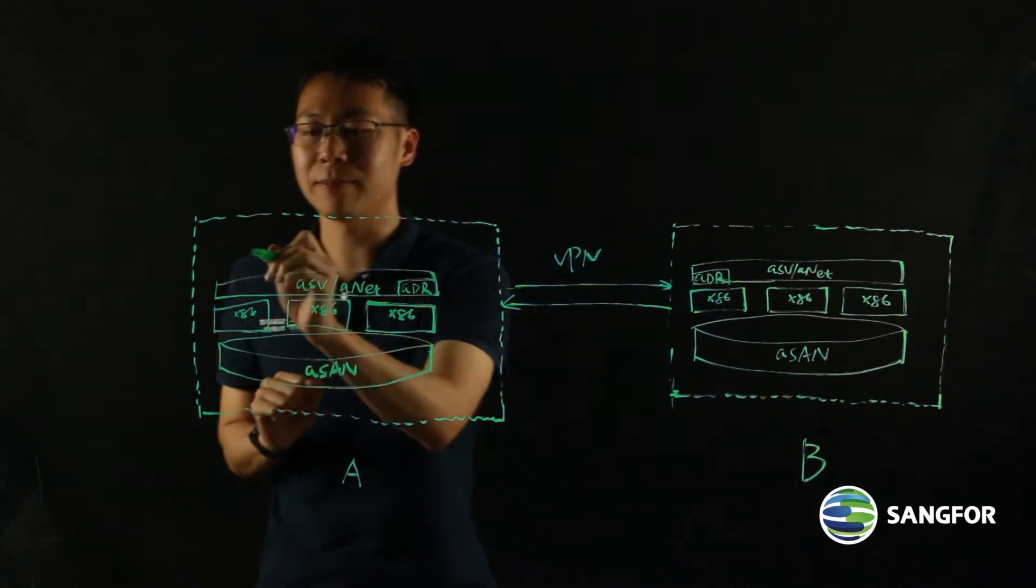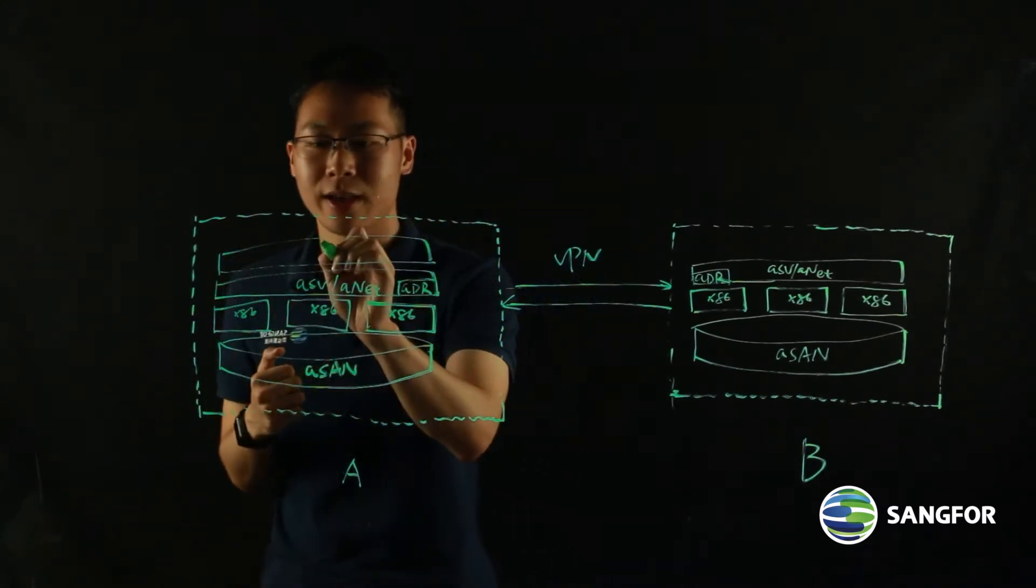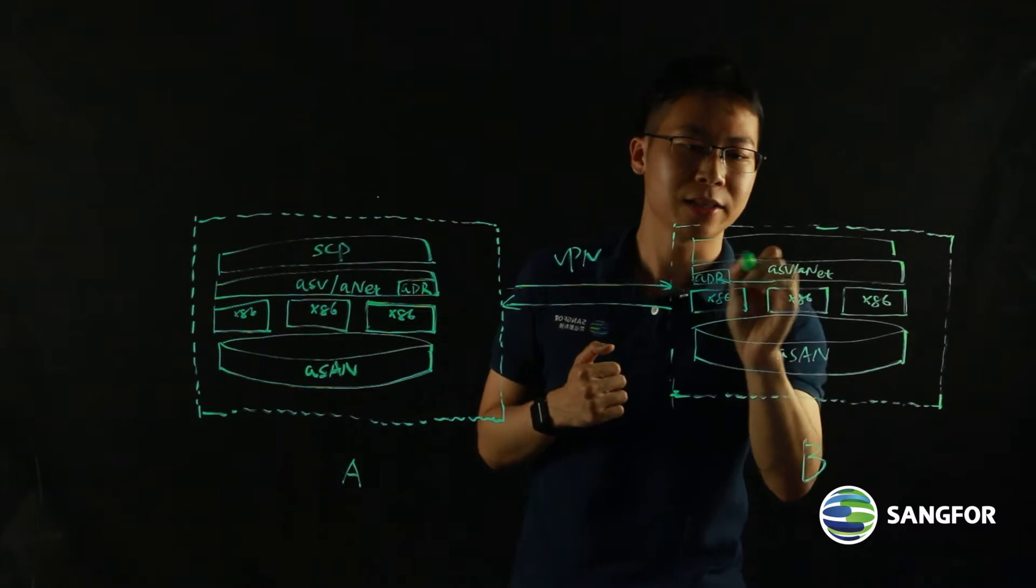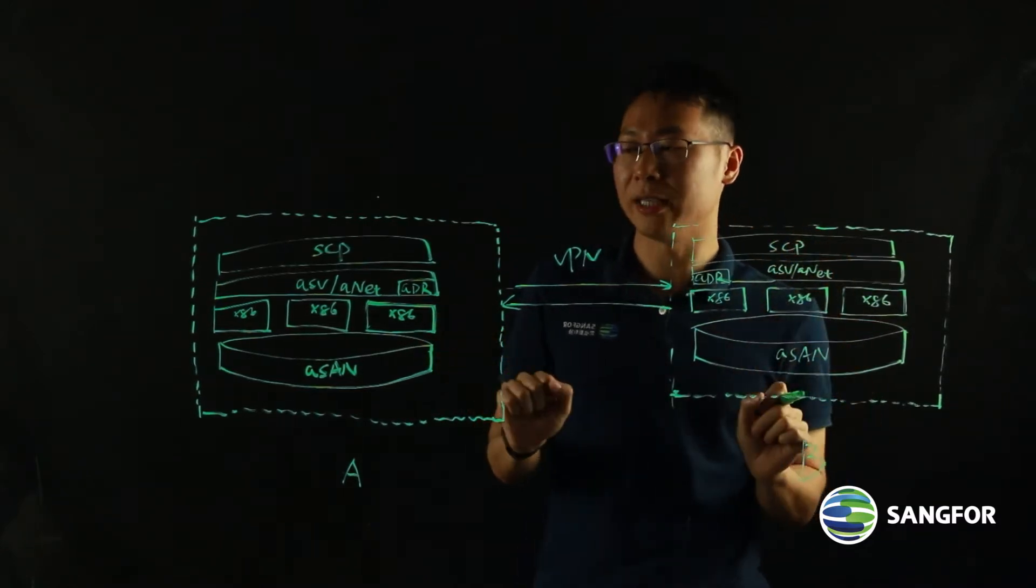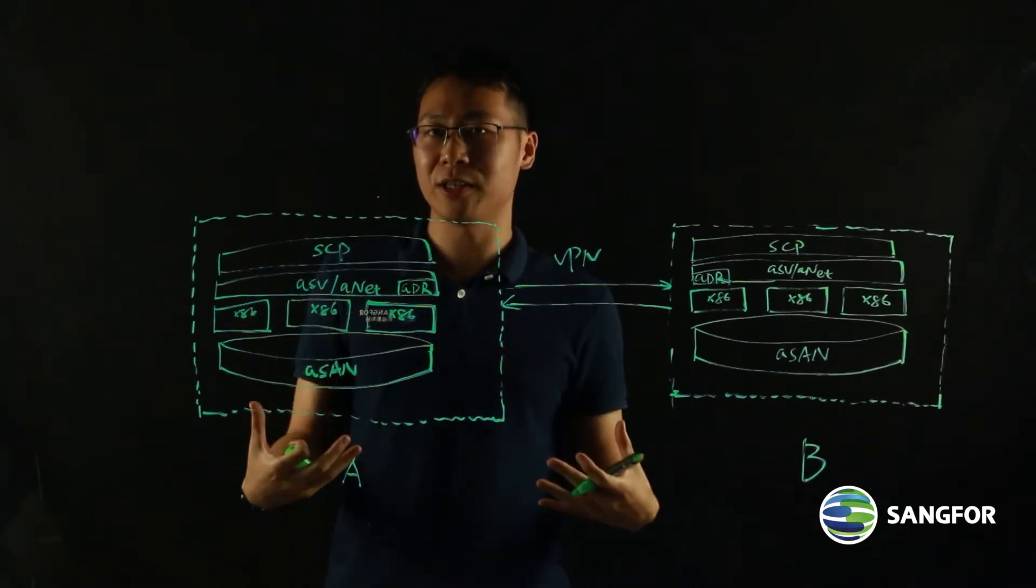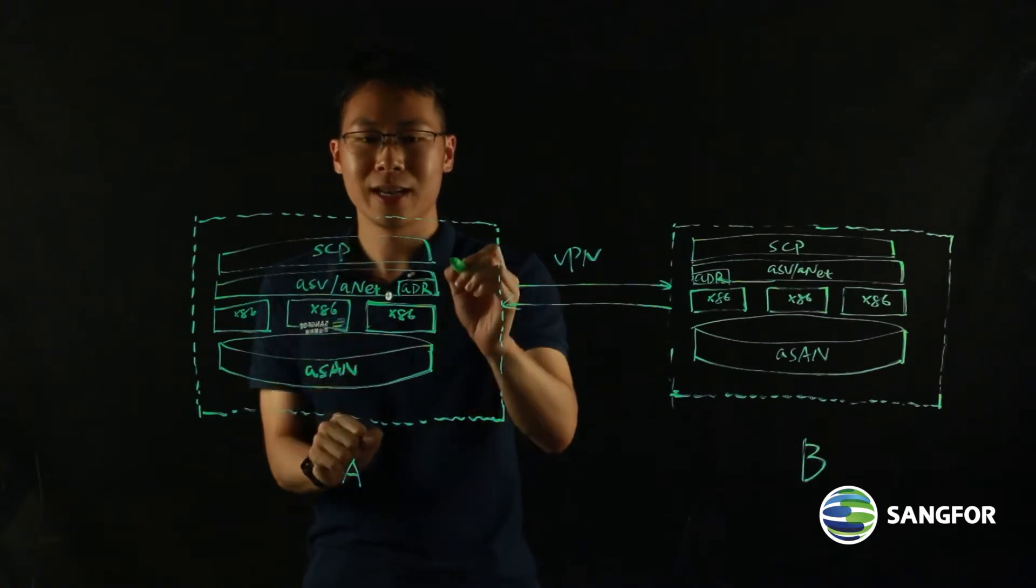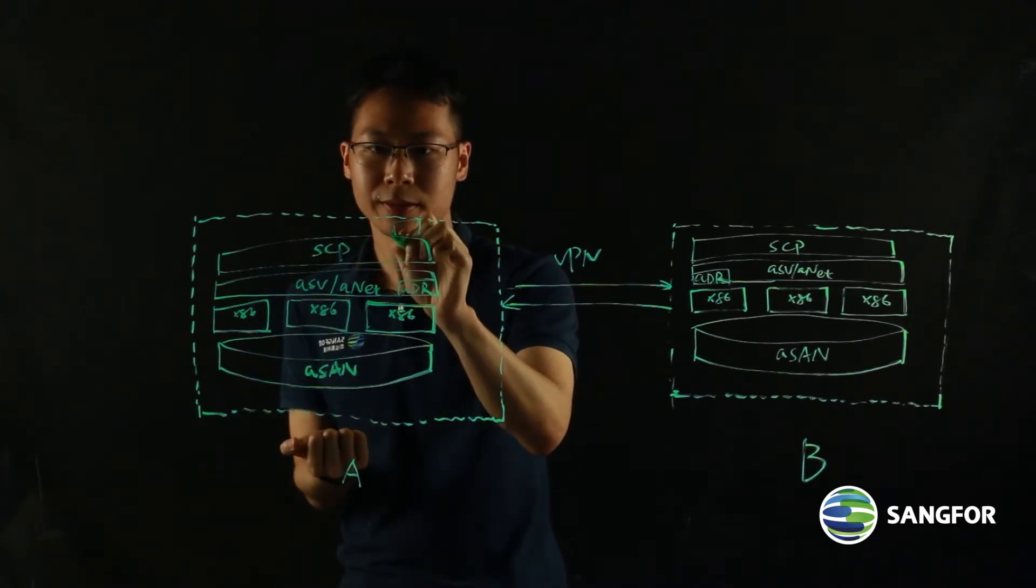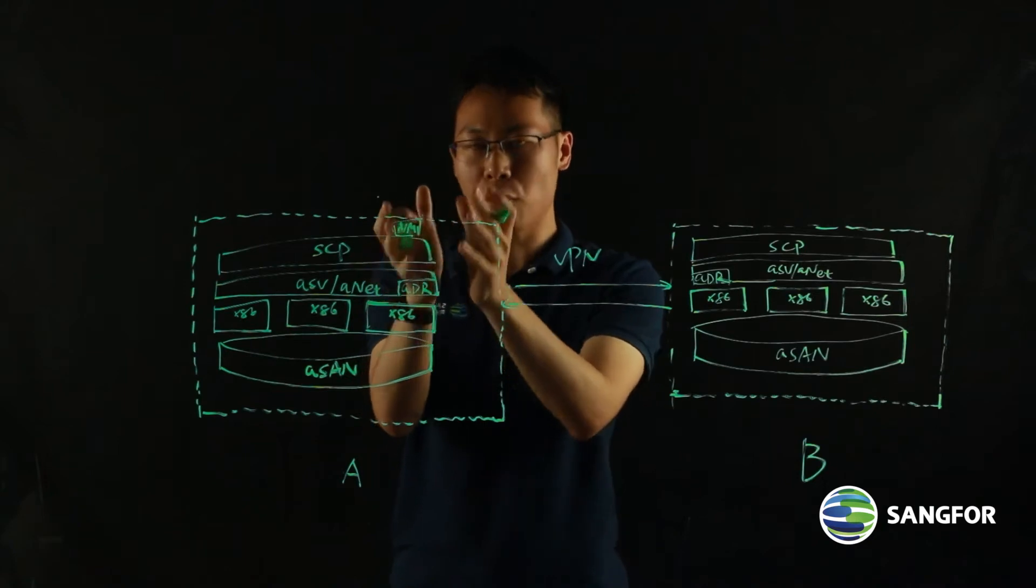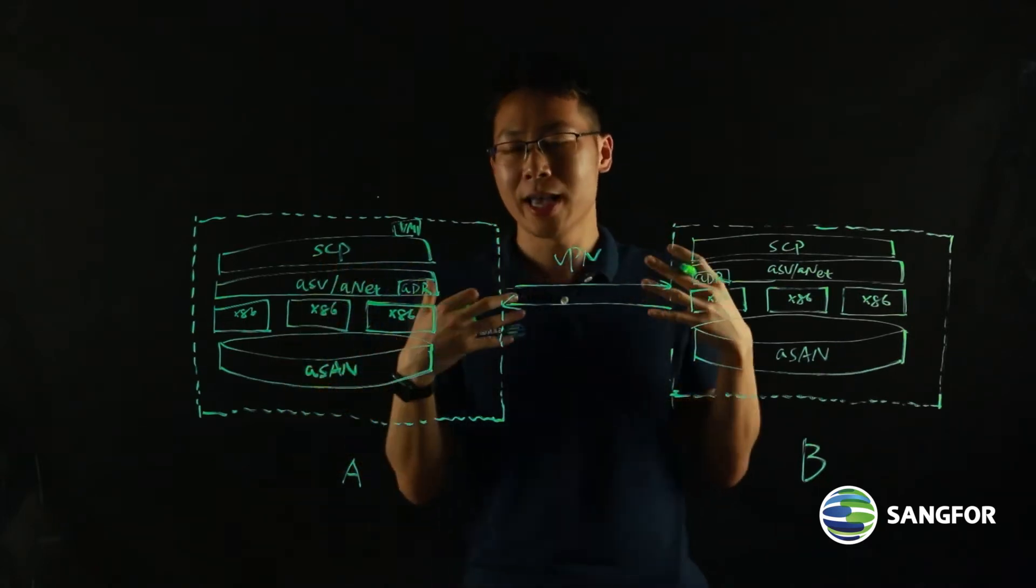Our disaster recovery solution is managed by our cloud management platform. Previously it was called ACMP, now it's called SCP, Sangfor Cloud Platform. So you need to deploy SCP at the two sites. Because our disaster recovery solution is a policy based management solution, if you need to apply disaster recovery for a particular workload, let's say I have a VM-1, and I want to extend the protection for it to another site, then I can initiate a policy on the web UI of our SCP.